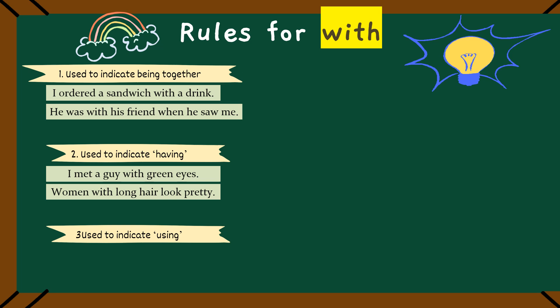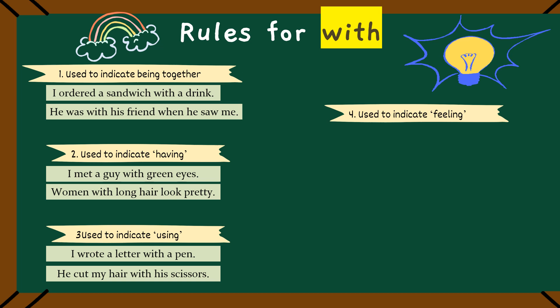Used to indicate using. Now, with can also show what tool or thing we use to do something. For example, I wrote a letter with a pen. That's right. The pen is the tool here. Or, he cut my hair with his scissors, which tells us what he used. Yes! His scissors. Pretty handy. Pretty easy.